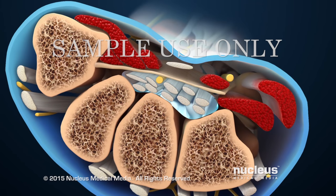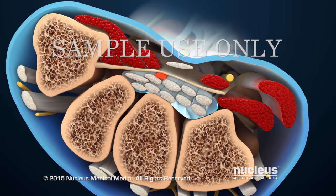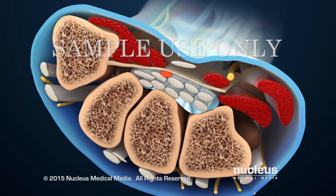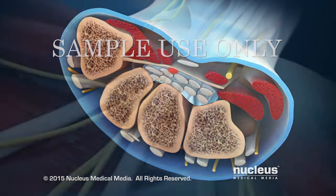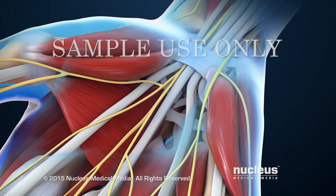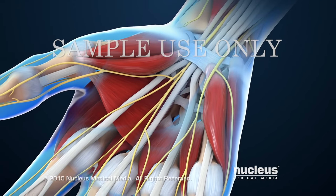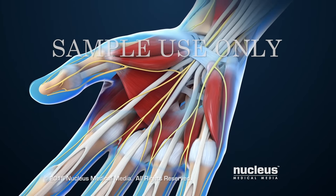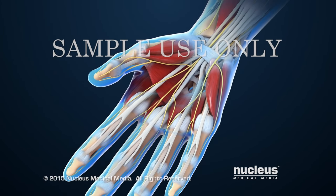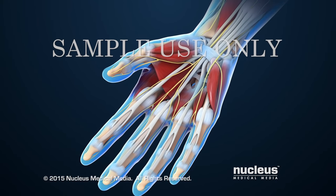Carpal tunnel syndrome is a condition where tissue swelling causes pressure to build up within the carpal tunnel. This puts pressure on the median nerve. Over time, median nerve pressure results in symptoms in the areas of the hand it supplies.